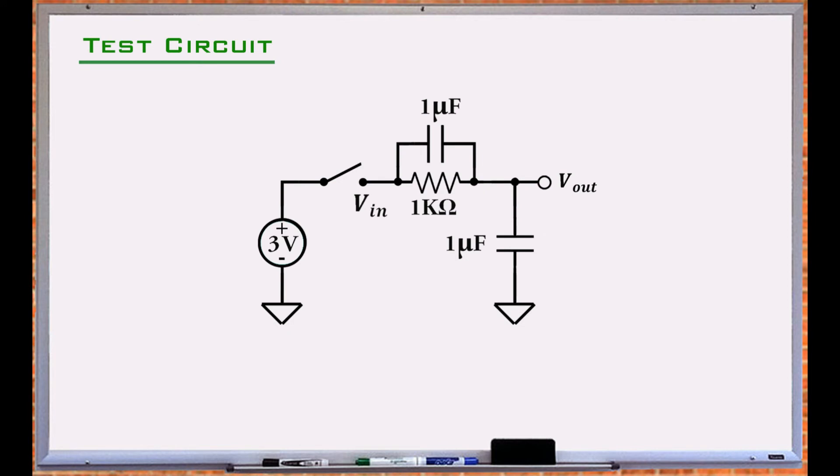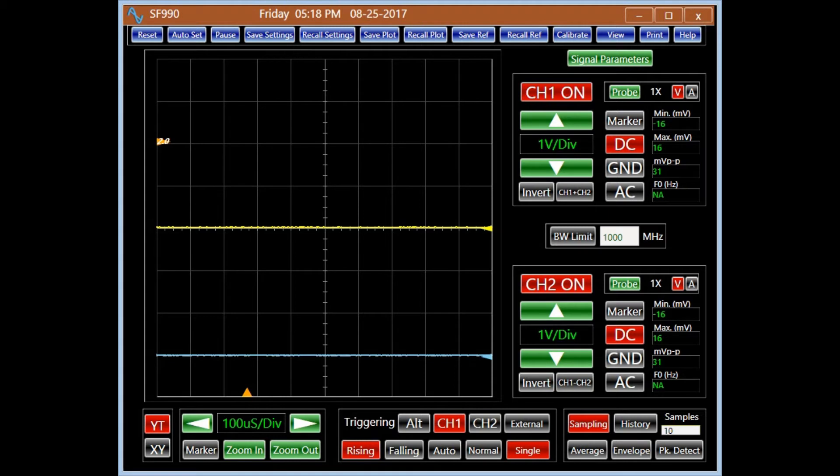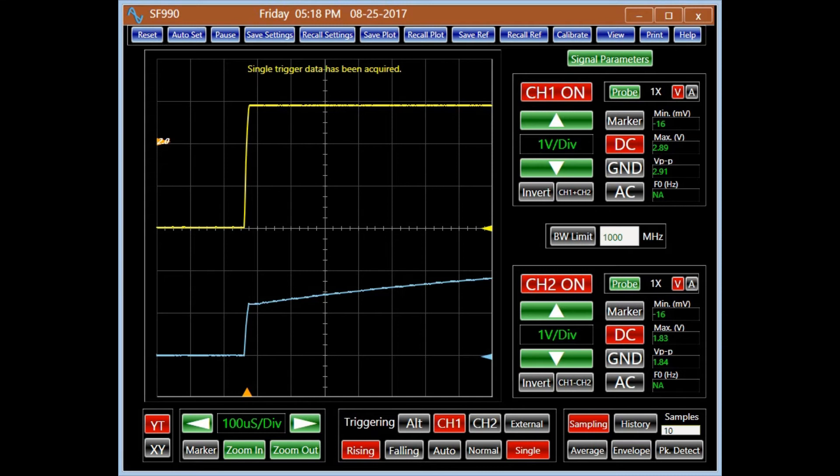Now let's examine an actual circuit. Using the single-trigger mode of an oscilloscope, we capture the output when the switch is turned on. Channel 1 in yellow displays Vin, and channel 2 in blue displays Vout.